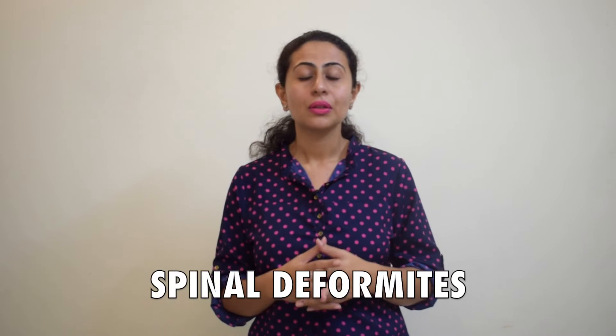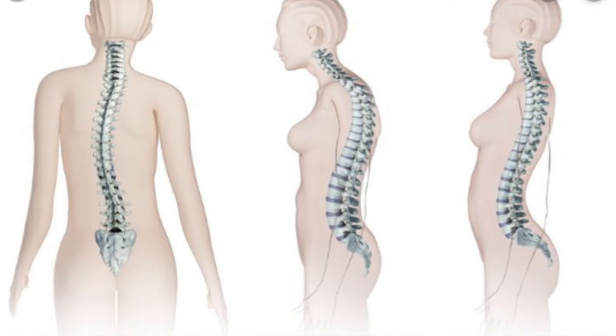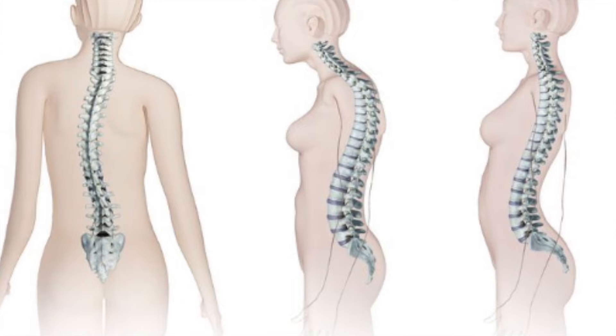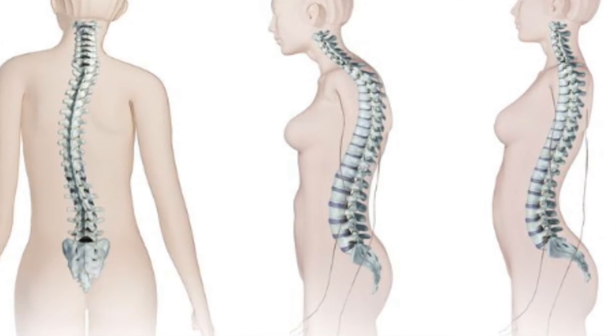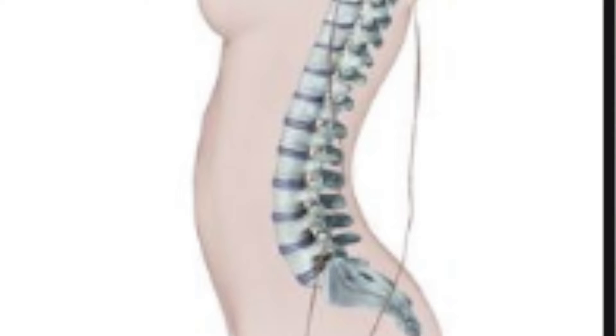Unfortunately, sometimes these curvatures of the spine become abnormal, leading to something called a spinal deformity, which can be of different kinds. The common spinal deformities are of three kinds. The first is something called Lordosis. Lordosis is where the curvature of the spine gets deeper. For example, our neck or cervical spine and the lower back or lumbar spine have an inward curvature. When Lordosis occurs, this curvature gets much deeper and is called a Lordotic spine.